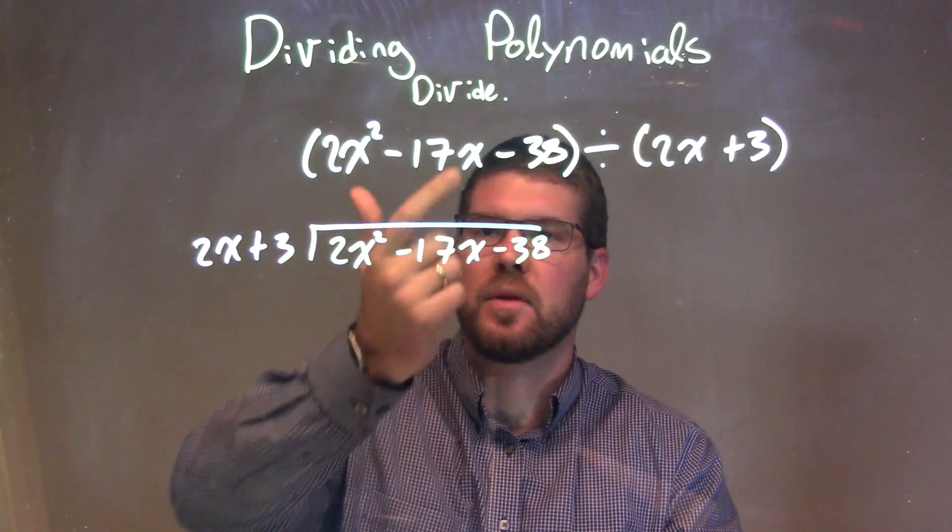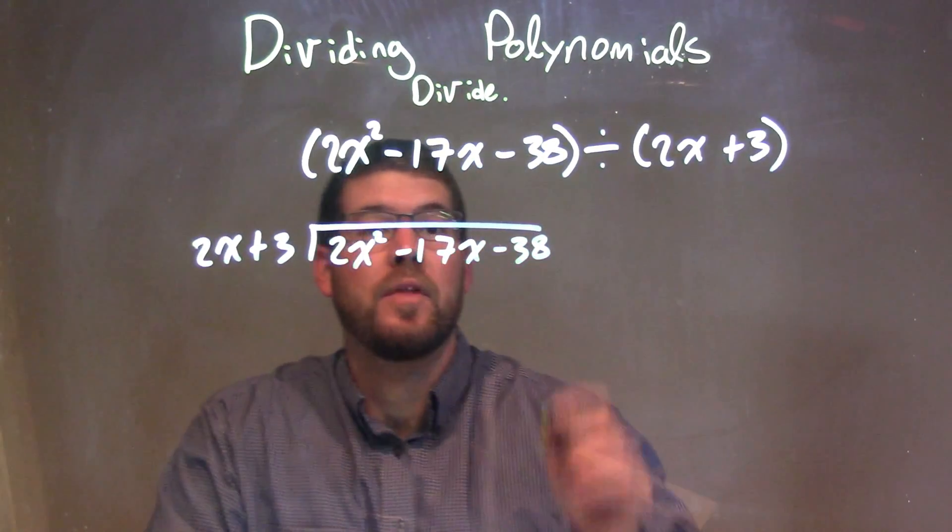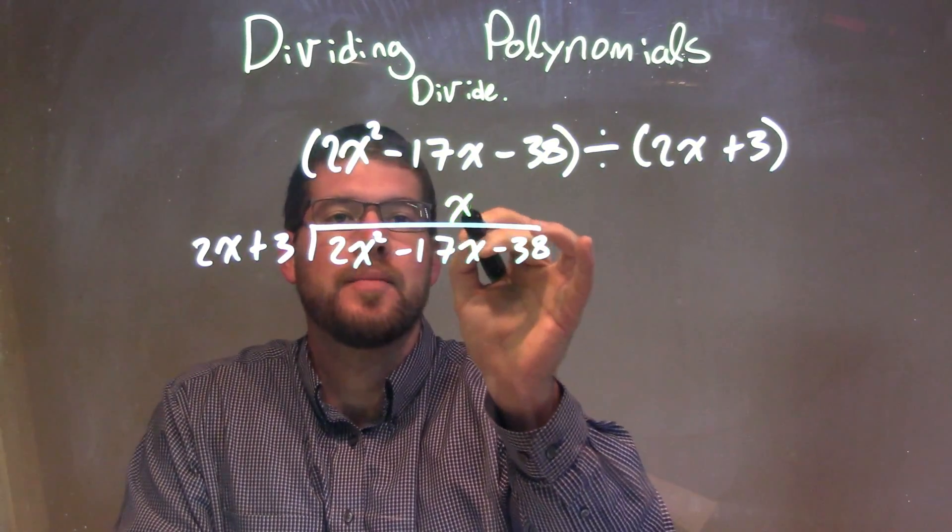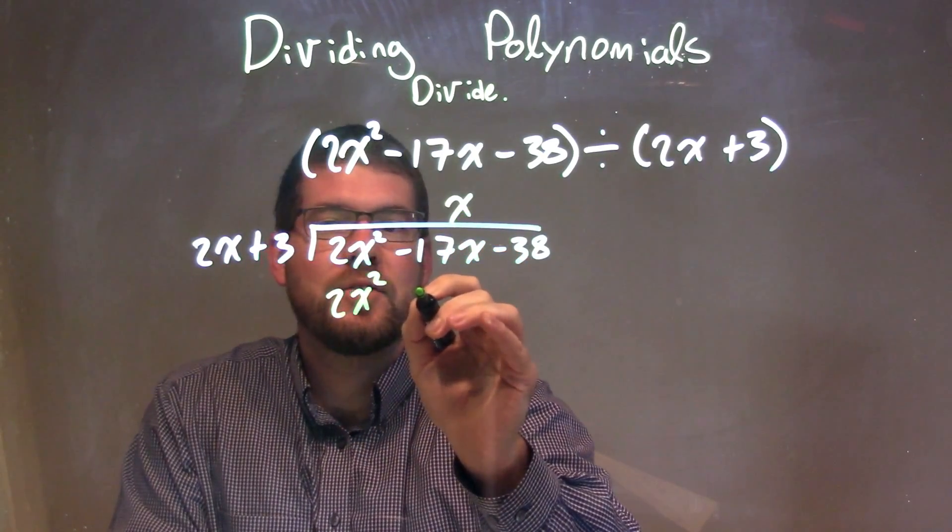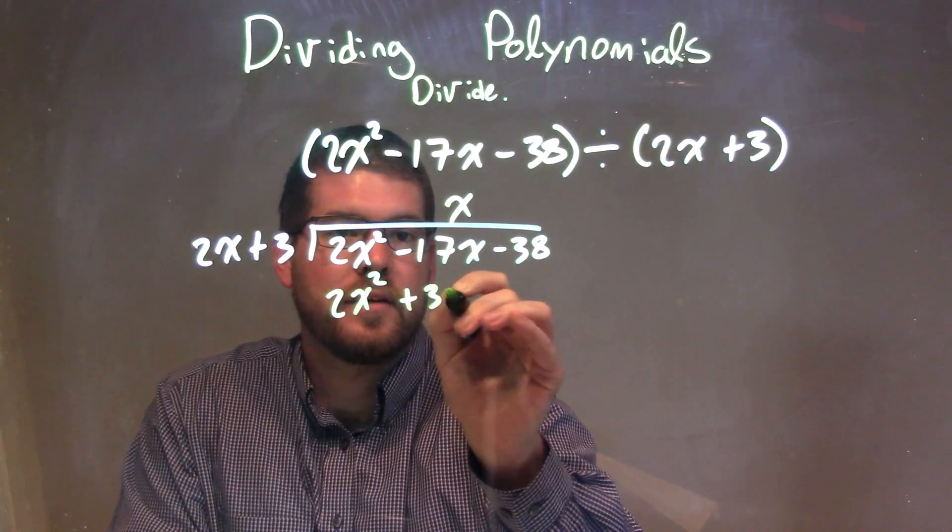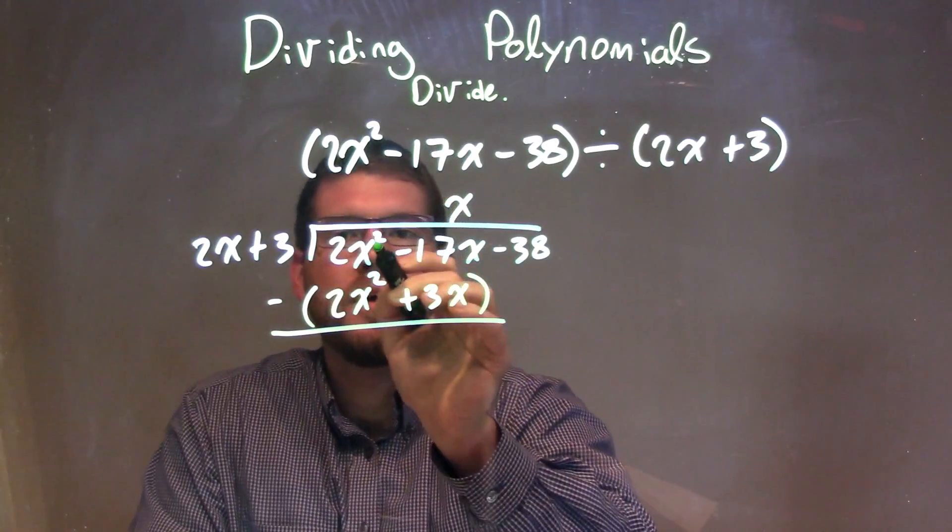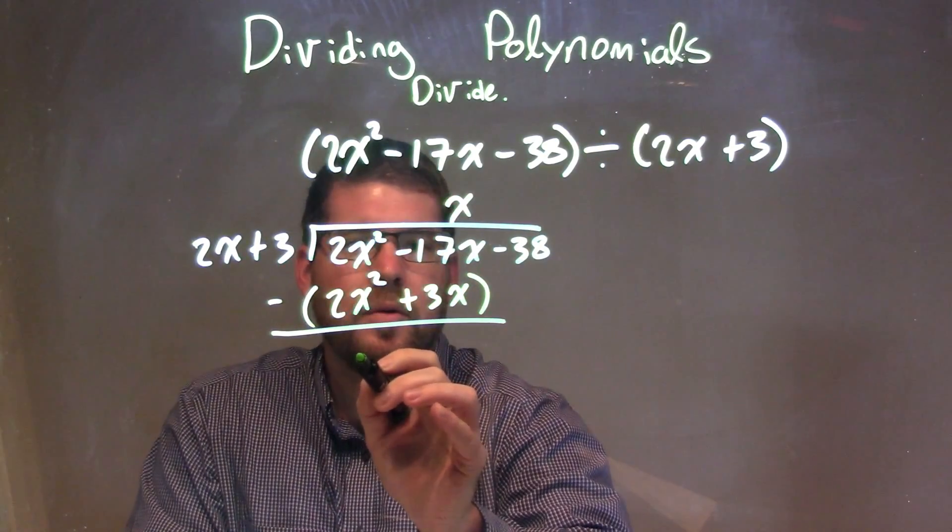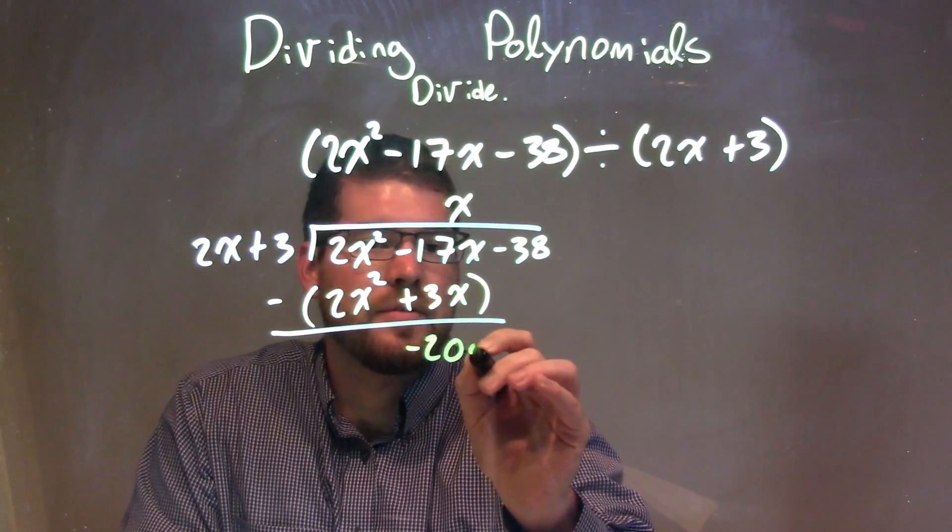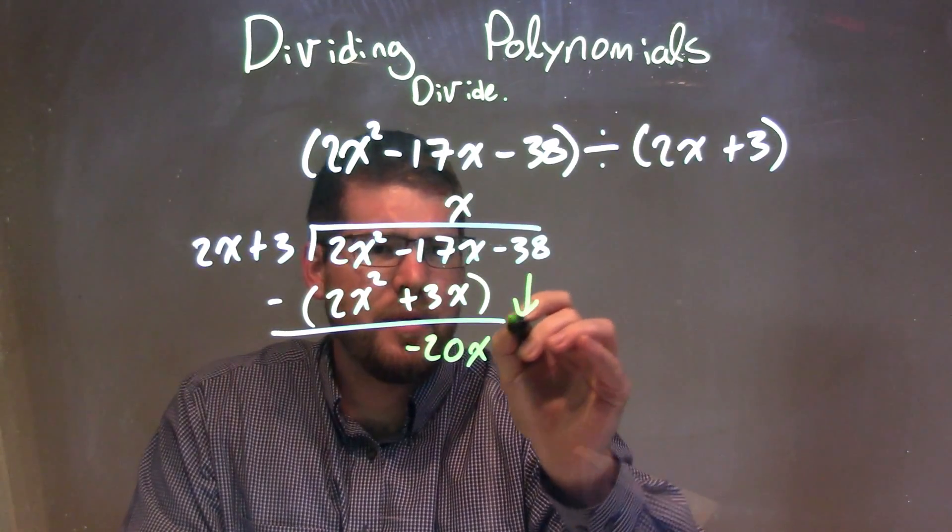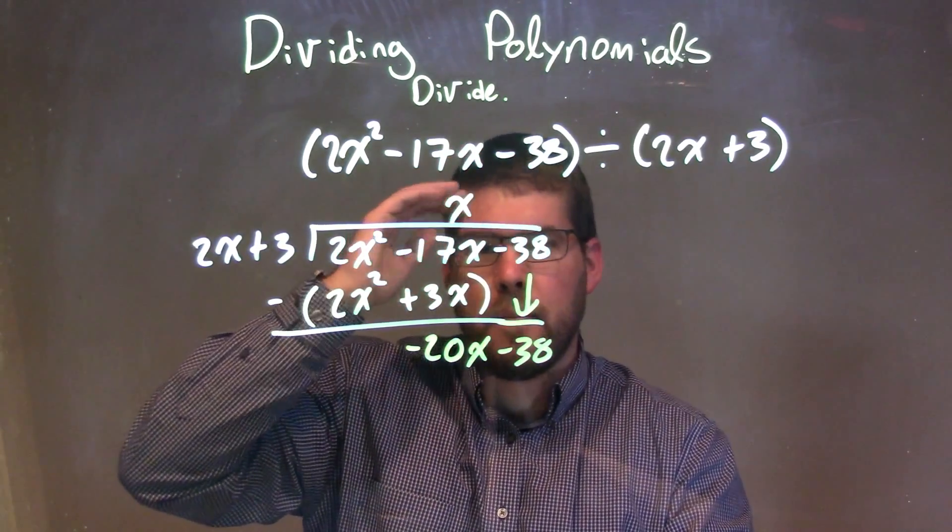We have to ask ourselves, what times 2x gives me 2x squared? That's pretty simple, that's just x. So x times 2x is 2x squared, and x times 3 is 3x. Now we subtract: 2x squared minus 2x squared is 0, and negative 17x minus 3x is negative 20x. Now I'm going to bring down the minus 38.